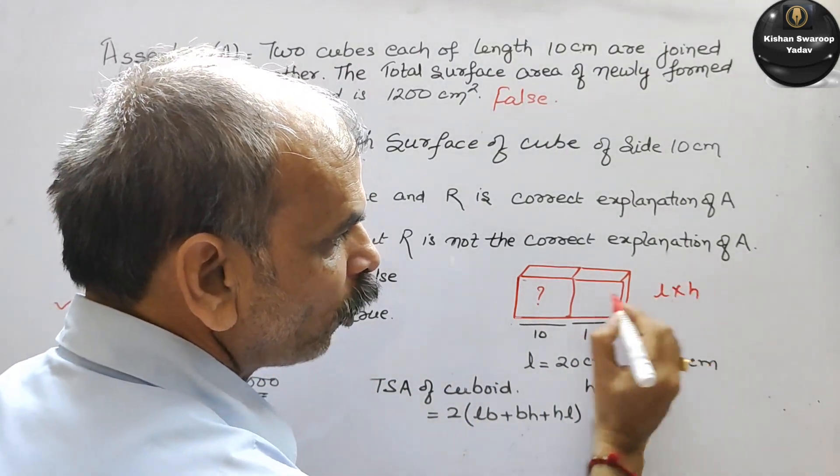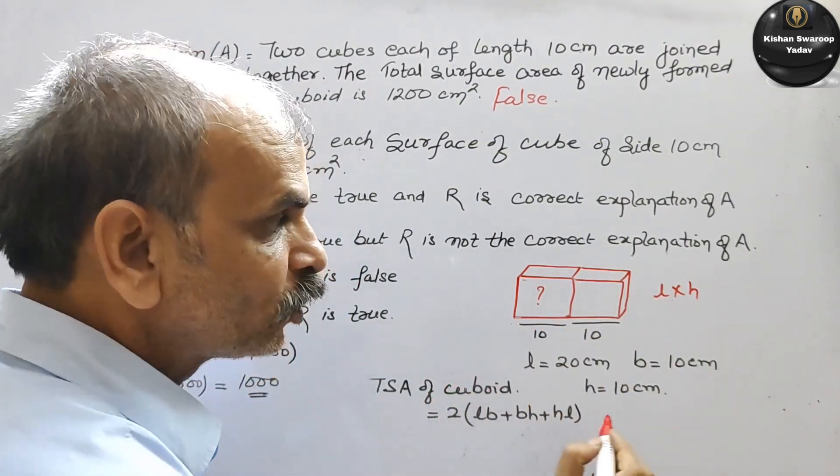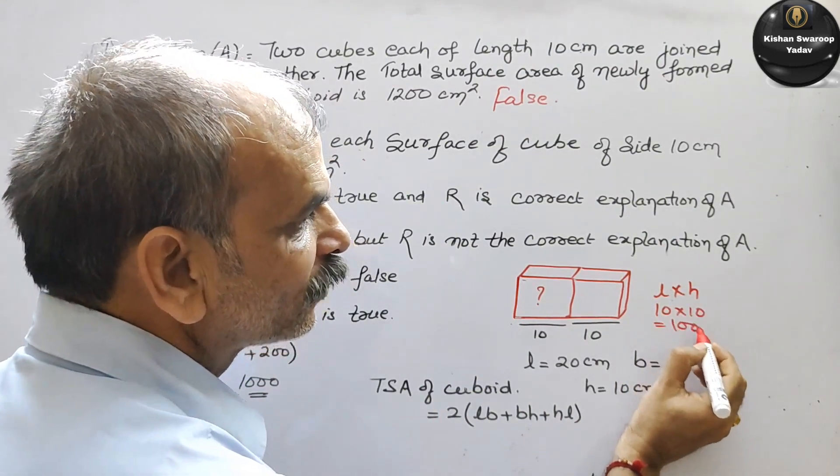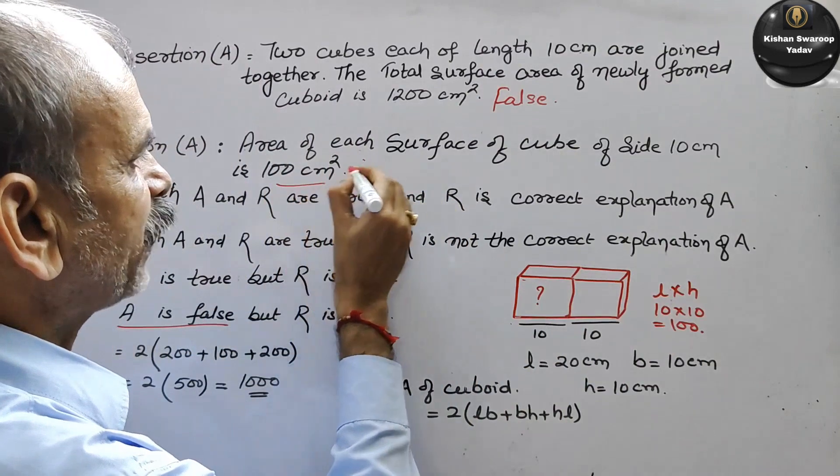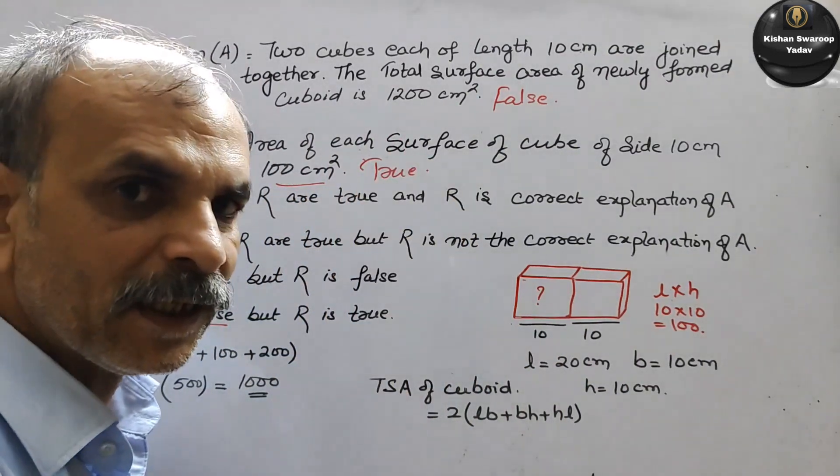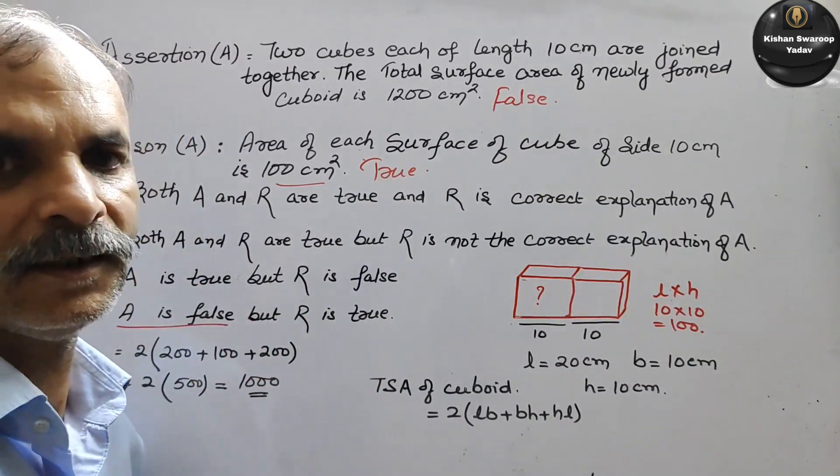Both are 10, so 10 into 10 is 100. It gives 100, so that means this is true. This is how you solve this type of problem.